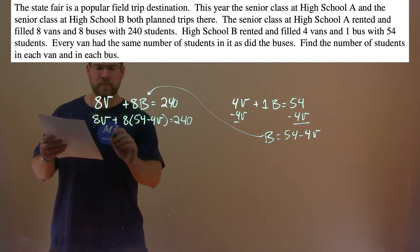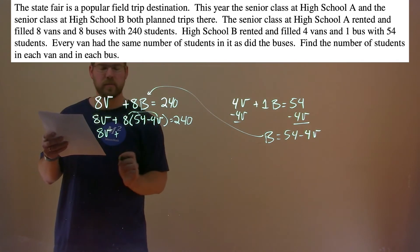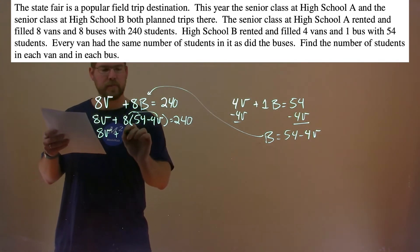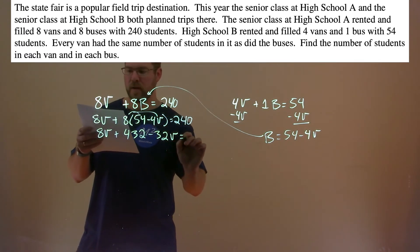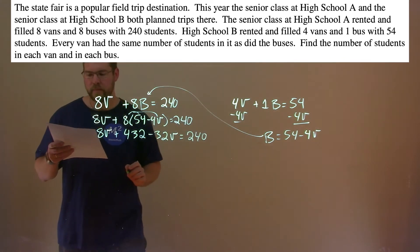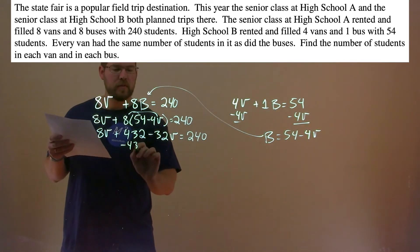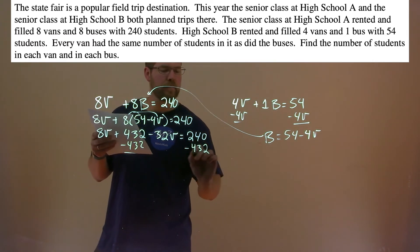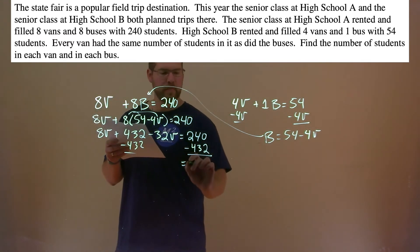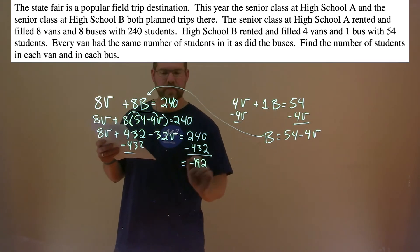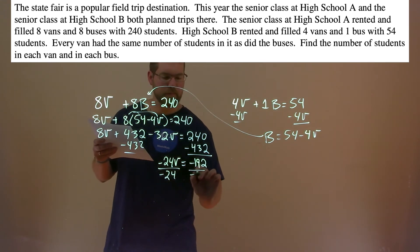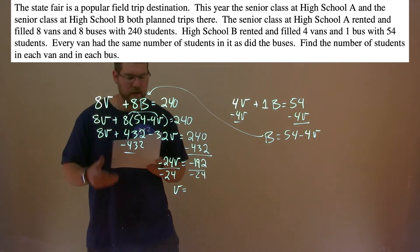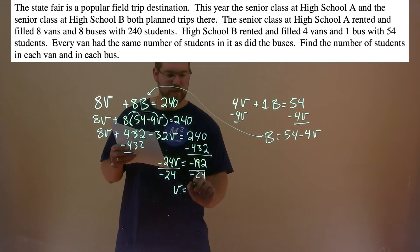Now we want to solve for v. 8v comes down. Distribute the 8 to both parts: 8 times 54 is 432, minus 8 times 4 is minus 32v, equals 240. We want to subtract 432 from both sides, and 240 minus 432 is negative 192. 8v minus 32v is negative 24v.